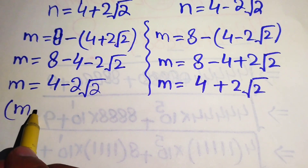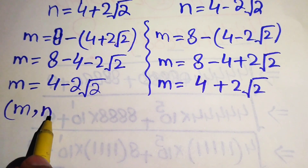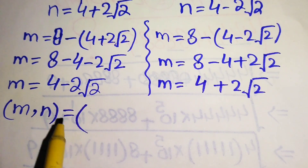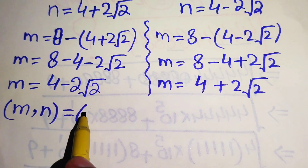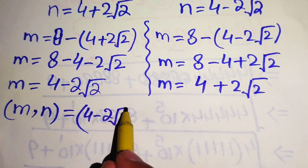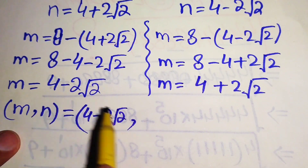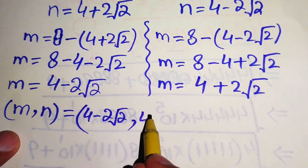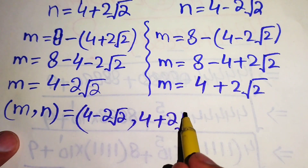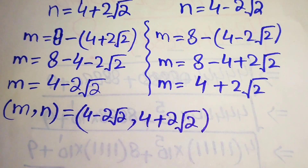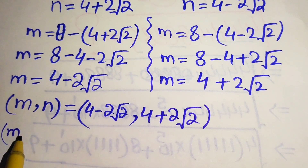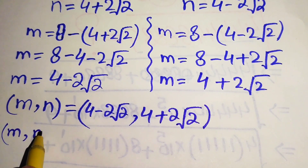So we have two solutions. The first solution is: m equals 4 minus 2 root 2 and n equals 4 plus 2 root 2.